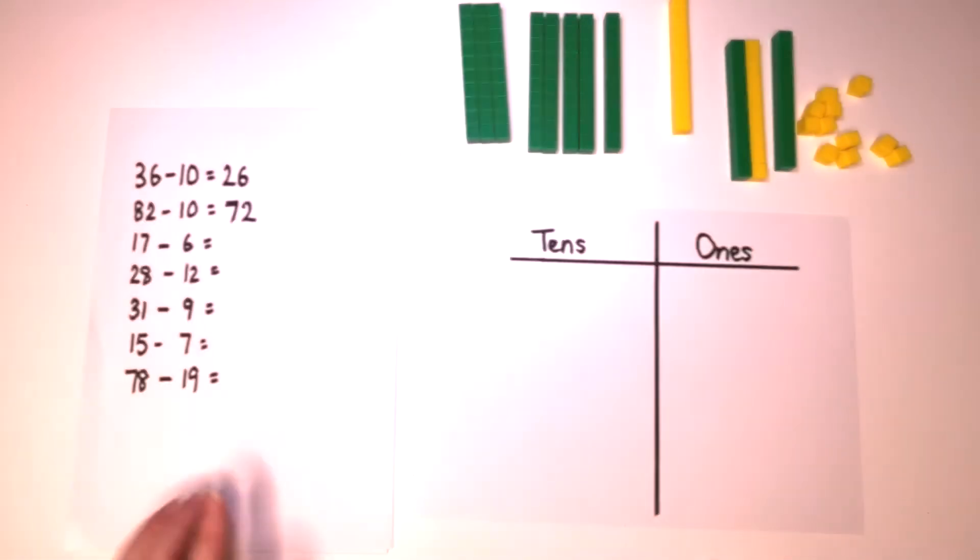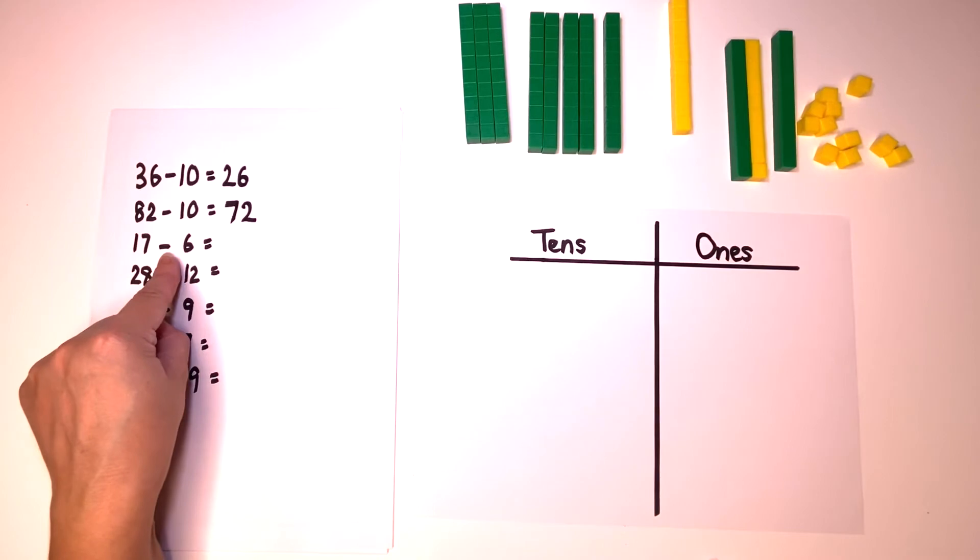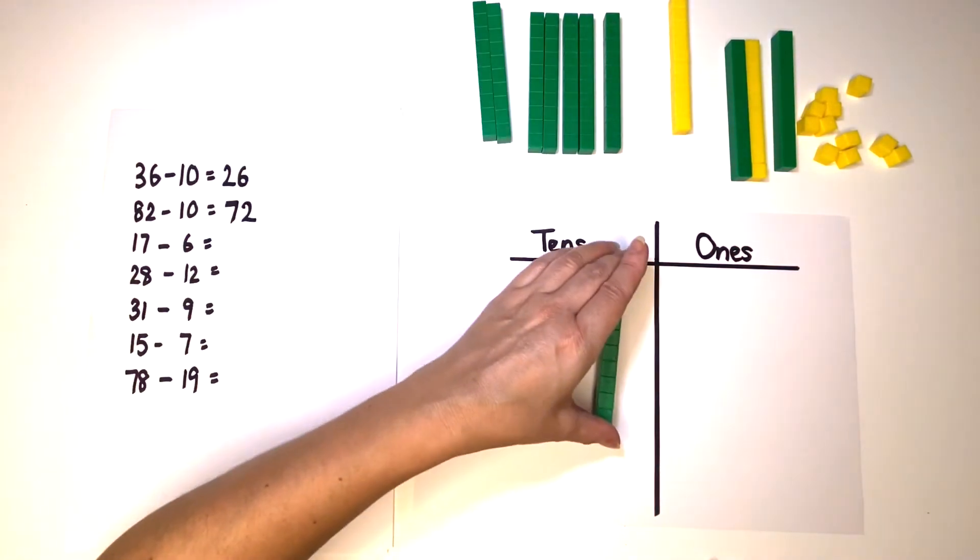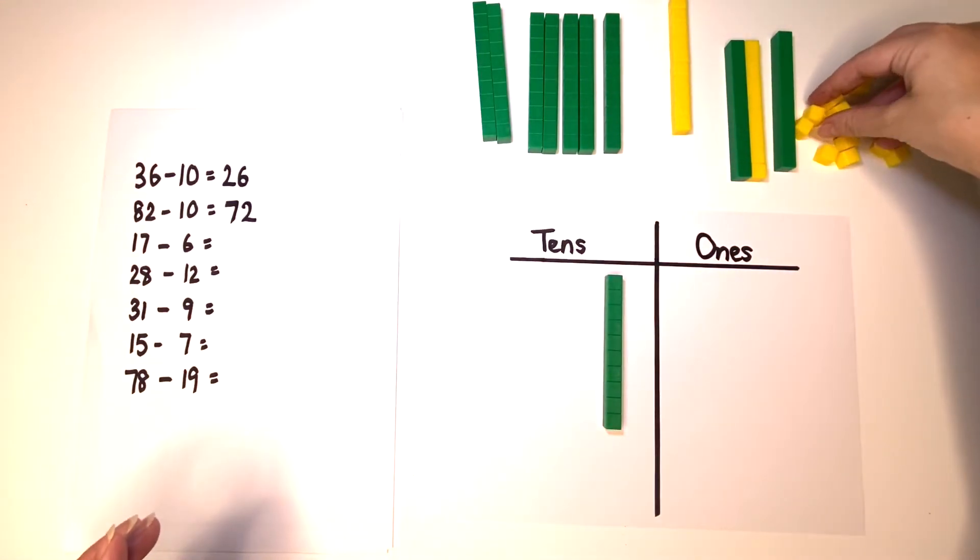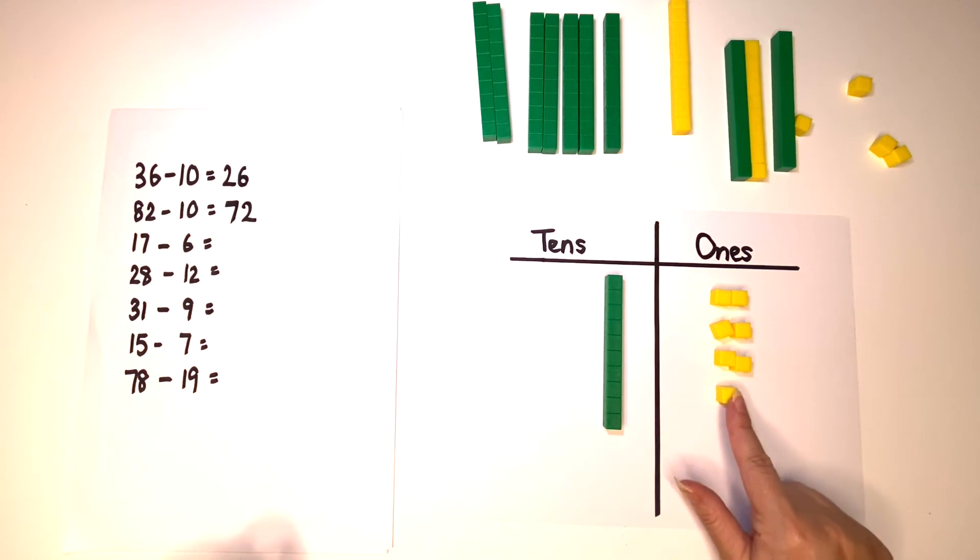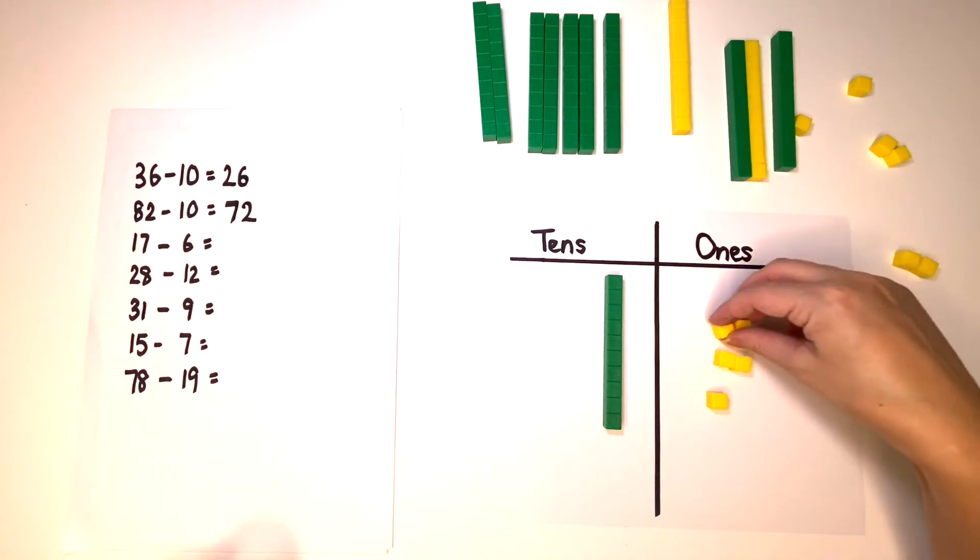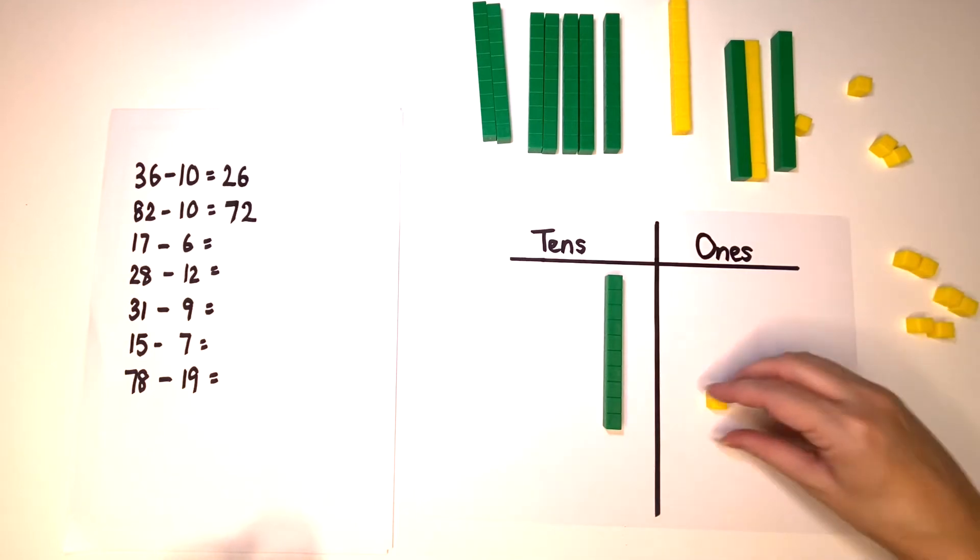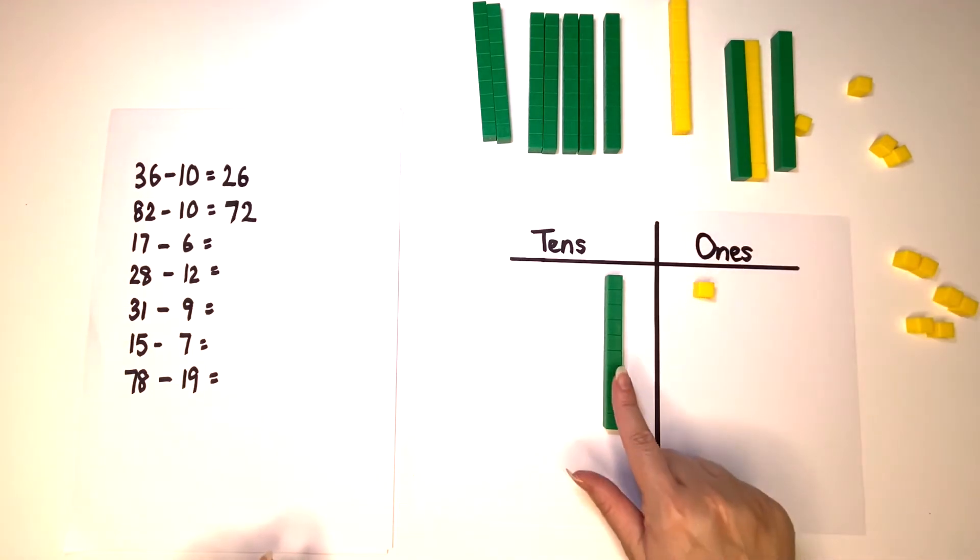My next number sentence is 17 minus six. Ten, two, four, six, plus one is seven. Seventeen, take six away. Two, four, six. And the answer is one ten and one one which is eleven.